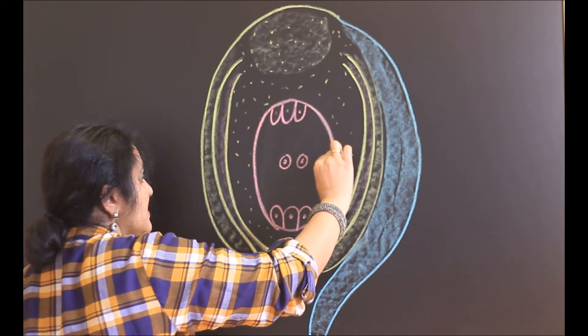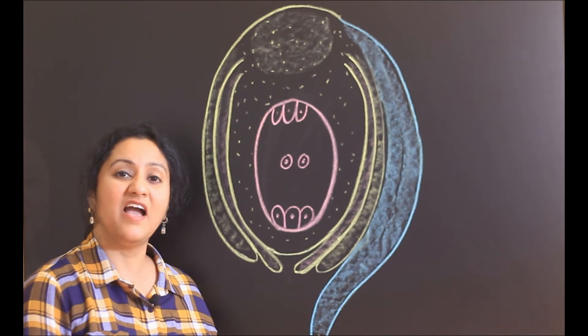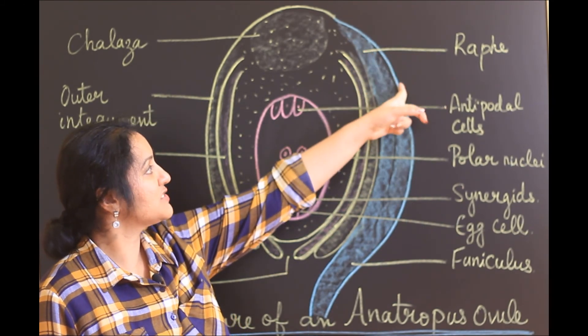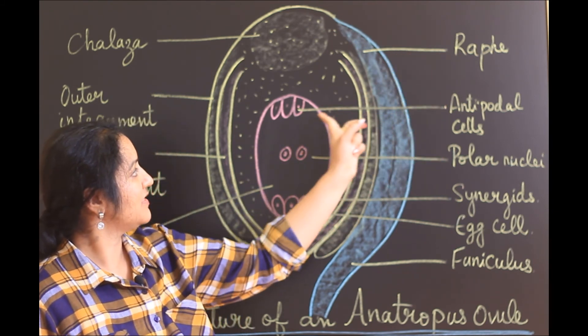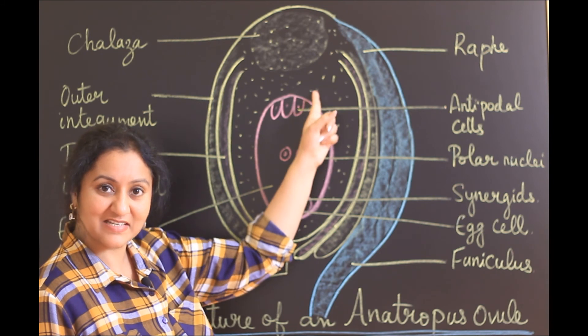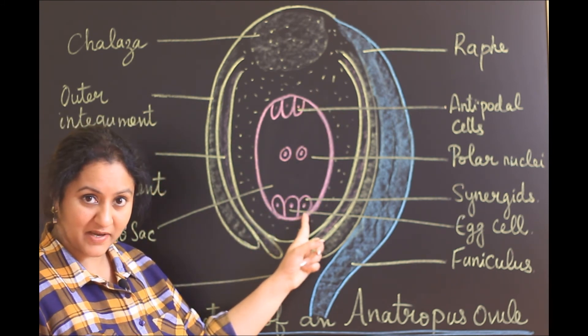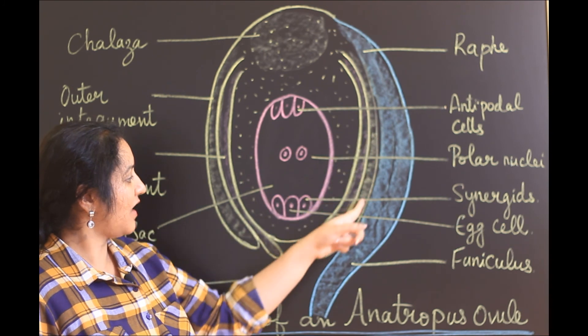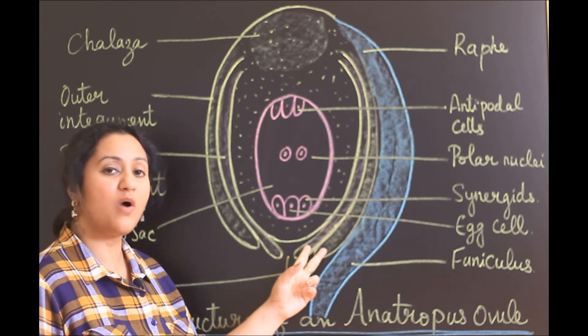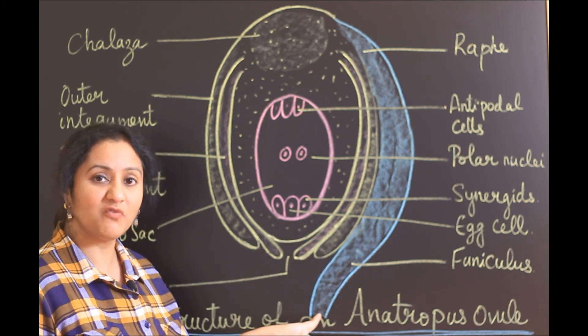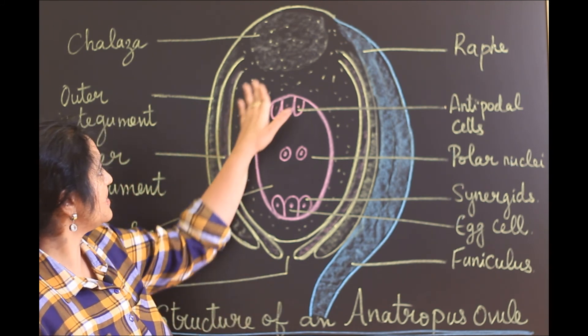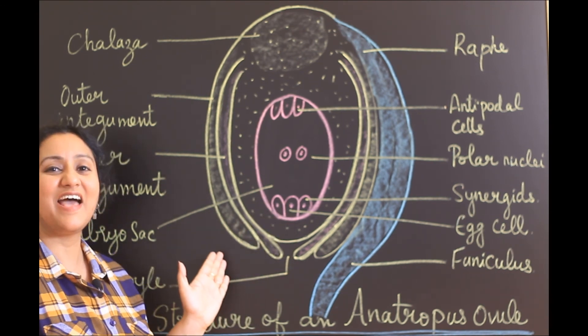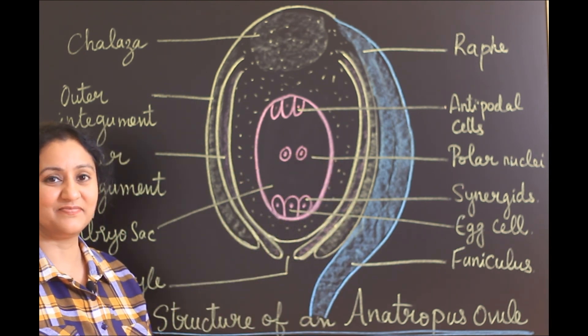This is the embryo sac. I hope it is clear. Now let us start labeling. This is the raphe. The ovule is fused with a funicle and forms a stalk. This is the embryo sac which has three antipodals in the chalazal area and an egg apparatus in the micropilar area with two synergids and one egg cell. In the center, it has two polar nuclei. The outer integument and inner integument, these two are for protection of the embryo sac. Funicle is a stalk which attaches the ovule with a placenta and this is the nucellus region from which all these parts are being formed. This is an anatropous ovule which is inverted. Hope you like this.